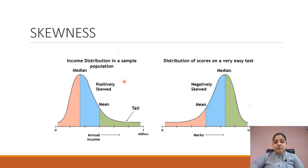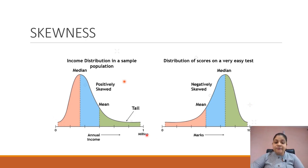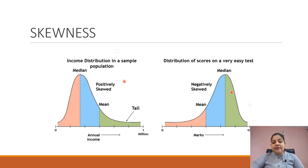Next is skewness. Skewness refers to two aspects: when the data is distributed mostly on the left side or on the right side rather than the center point of the data. If my data is distributed on the left side it is called positively skewed, and if my data is distributed on the right side it is called negatively skewed.